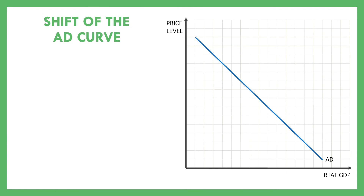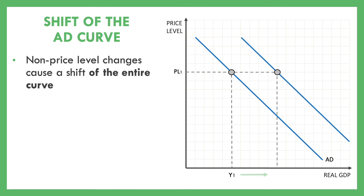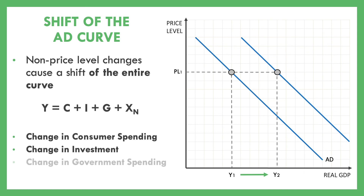So what causes the entire aggregate demand curve to shift? Something outside of a price change must be responsible. If we want our Y to increase using the equation Y = C + I + G + X sub N, any of the four components on the right-hand side must increase: consumer spending, investment, government spending, or net exports. An increase in any of those would cause the entire curve to shift.